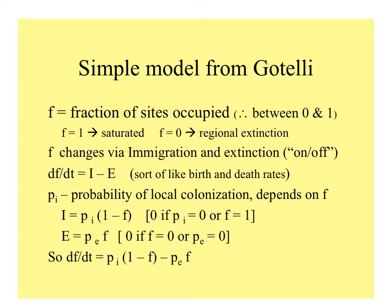So df/dt is equal to immigration minus extinction, kind of like birth and death rates in little r. If p sub i is the probability of local colonization, that depends on the fraction of sites occupied. Immigration is equal to the probability of local colonization times 1 minus the proportion of sites occupied. This would be nothing if the probability of colonization is 0, or if all of the sites were already occupied (f equals 1). So df/dt, the change in the fraction of sites occupied, equals immigration minus extinction as defined by these equations.